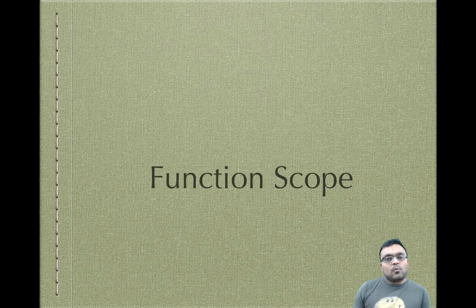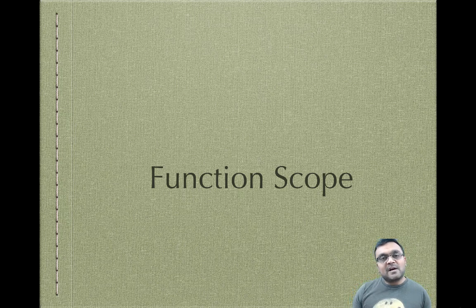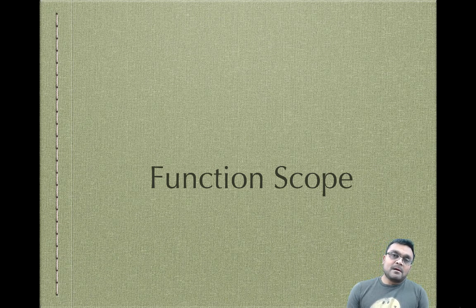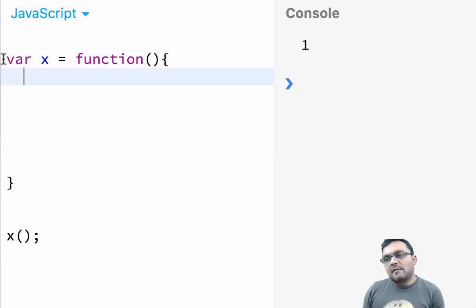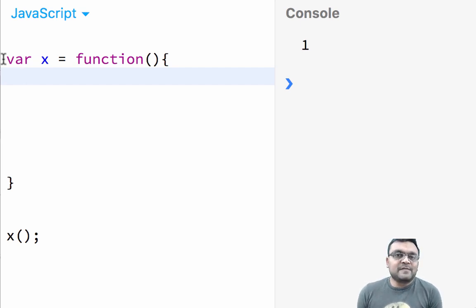One of the biggest mistakes JavaScript has with VAR is that when you define a variable using keyword VAR, that variable gets what is called function scope. Function scope means when you define a function, a variable defined within the boundary of that function is available throughout the entire function.